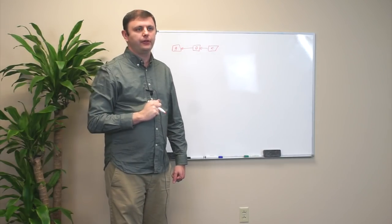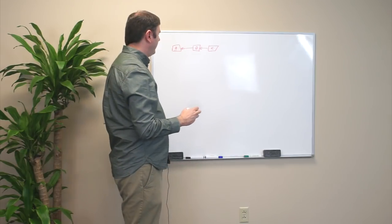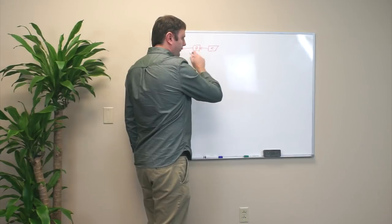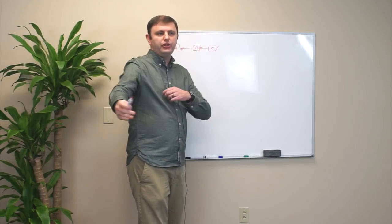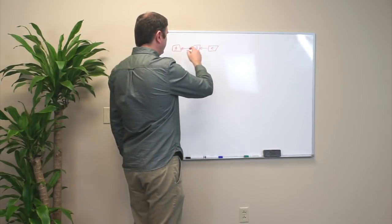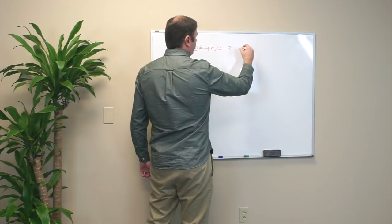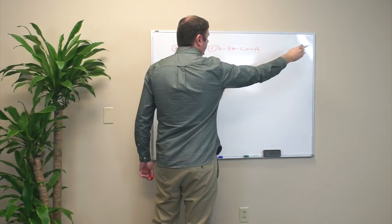There's only one block producer who can produce a block at that time. And on Steem and BitShares, every round, which is all 21 block producers, we shuffle them. So it might be A, B, C, this round, and then the next round it might be B, C, A, and so on, as time goes.